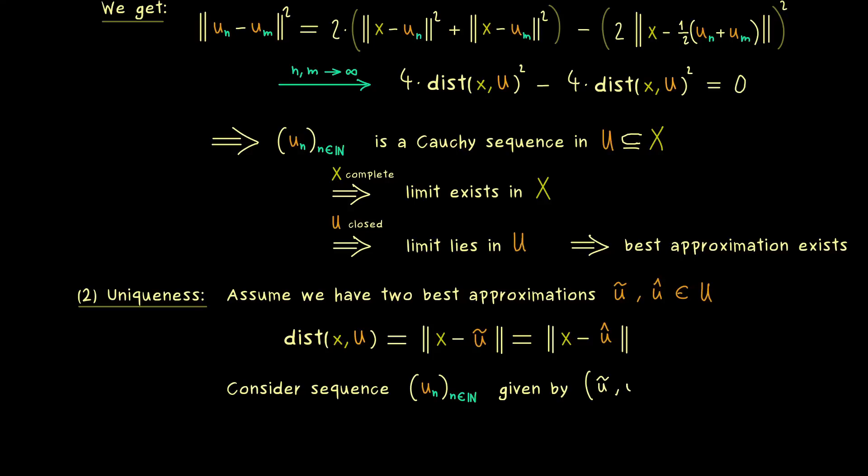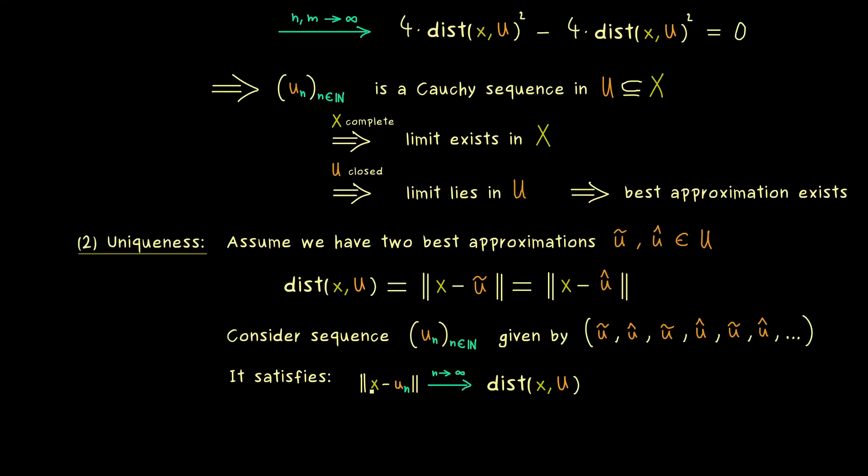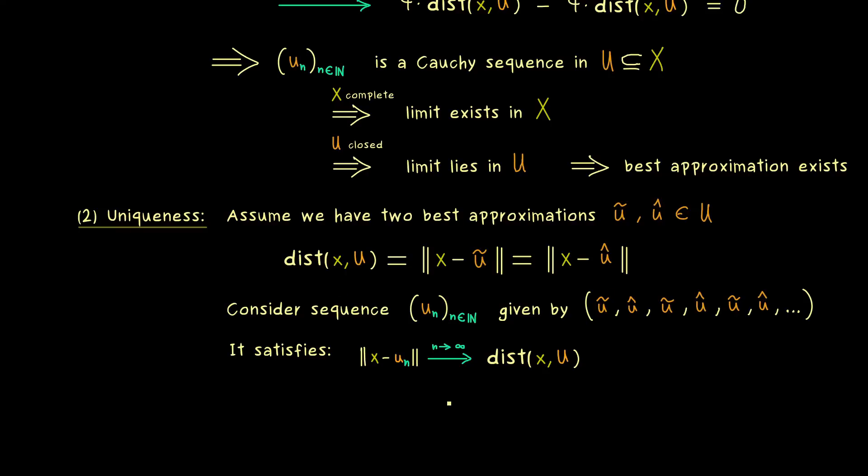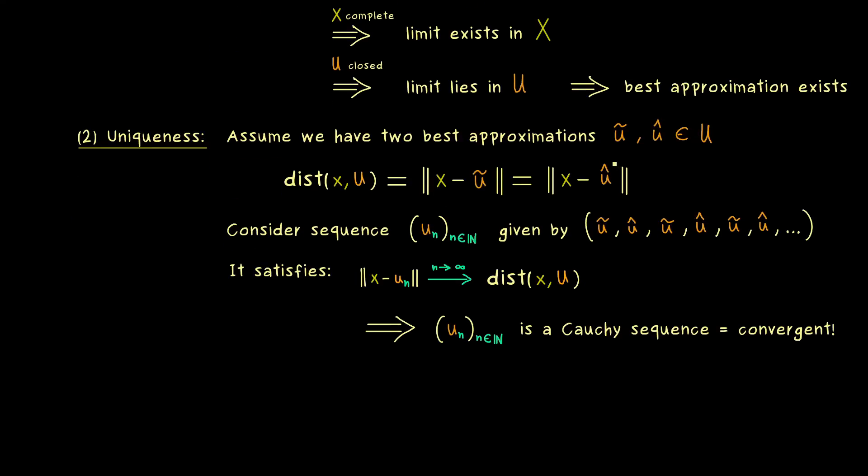So it's just alternating between two elements, which means it's a well-defined sequence in U. However, now the thing is, this sequence satisfies everything we have shown before. Simply because it definitely has the property that it approximates the distance function as well. There is no question about this limit at all, because the left hand side here is actually a constant sequence, because it's given by our distance function. So this important property is satisfied, which means everything from above applies to this sequence as well. In particular, we have shown it has to be a Cauchy sequence, which means it's also a convergent sequence. However, the only possibility that such an alternating sequence here is convergent, is only given if it's actually a constant sequence. And there we have it, two best approximations have to coincide, and the uniqueness is proven.